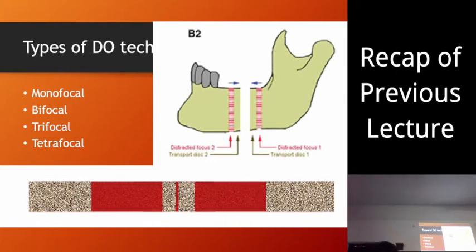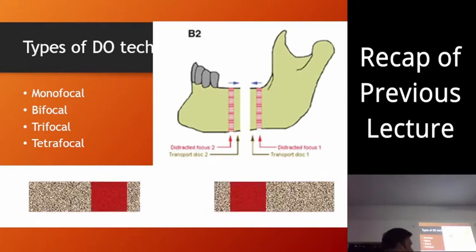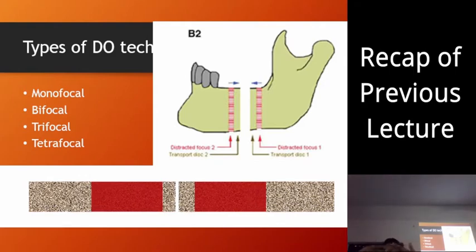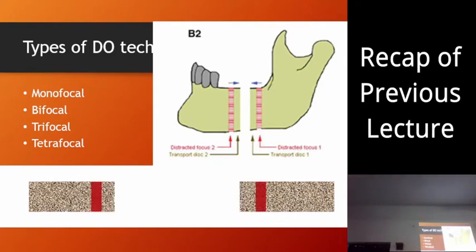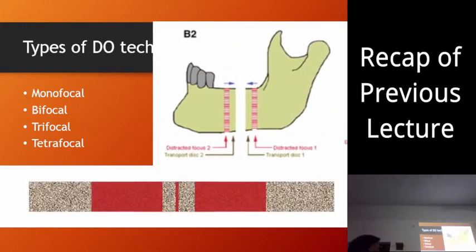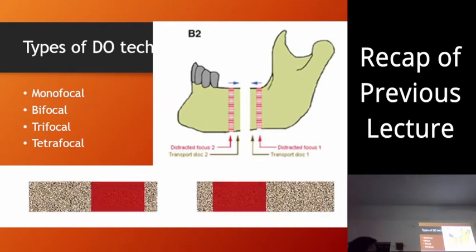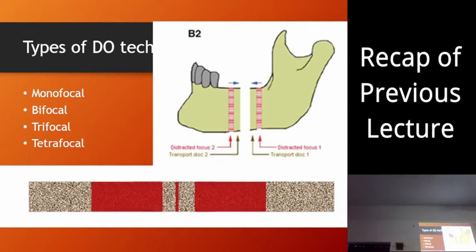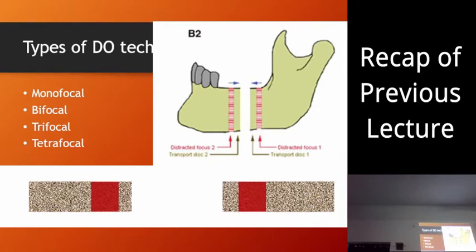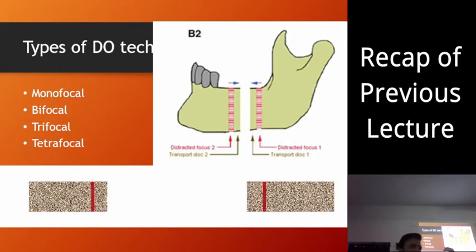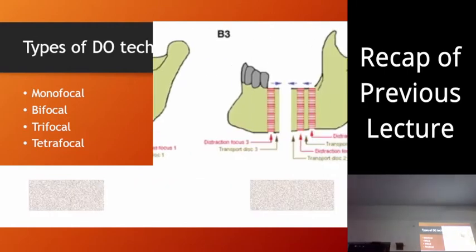In trifocal, we use transport discs from both ends — they are both moved towards each other. In the end, when they reach the final position, we graft the area between the two. When we do transport distraction, remember that the leading end of the disc gets covered by cartilage. When we use transport distraction, one end is covered by a cartilaginous structure.